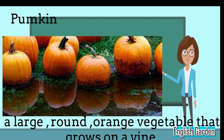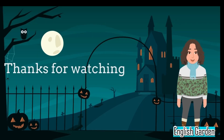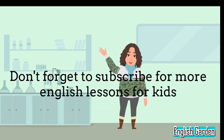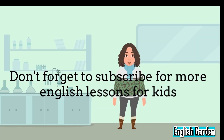Pumpkin, a large, round, orange vegetable that grows on a vine. Thanks for watching. Don't forget to subscribe for more English lessons for kids.